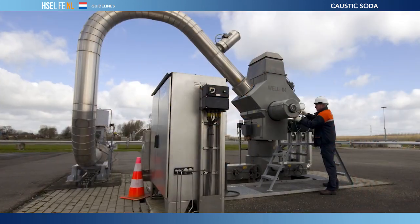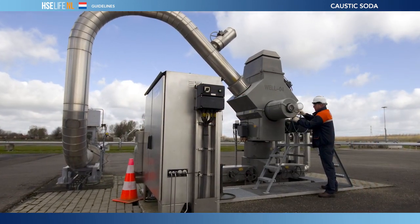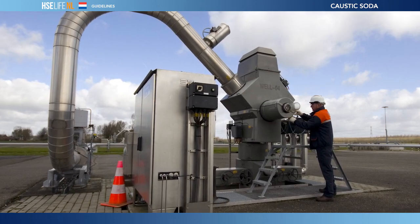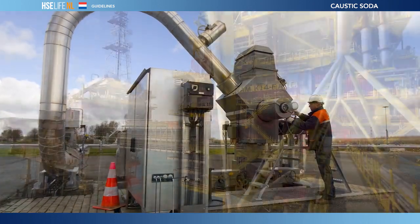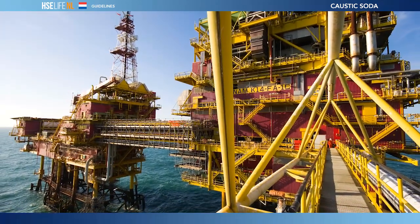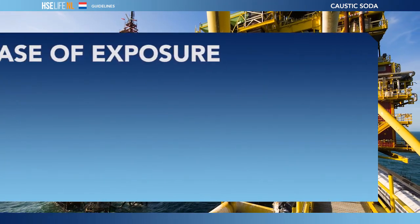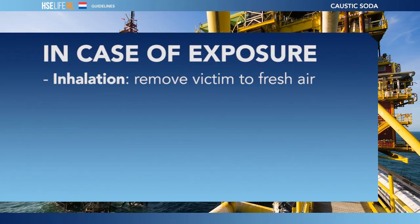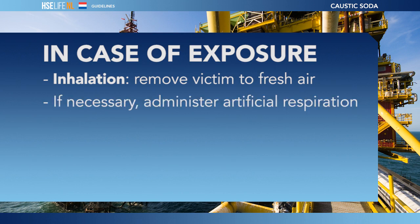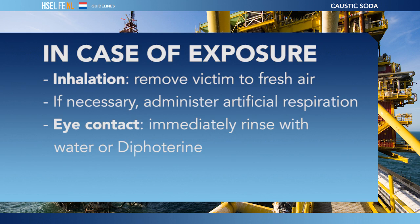You must always be aware of the dangers involved when working with caustic soda. Even if you do everything possible to prevent incidents, it is important to know what to do if things go wrong. If someone has inhaled vapors or spray mist, remove the victim to fresh air. If necessary, administer artificial respiration until professional help arrives. If caustic soda gets into the eyes, immediately rinse it out with water or diphotarine — if this substance is available in the workplace.